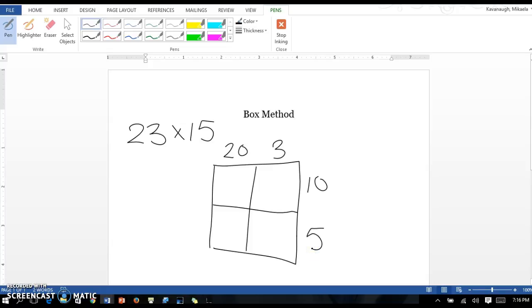From there we will multiply the 20 times the 10 and put it in that corresponding box. So we're going to get 200 here. Then we're going to take the 20 times the 5 and put that in its box and we'll get 100 here. Then we're going to take 3 times 10 and put that in its box so we'll get 30, and then 3 times 5 we're going to get 15.